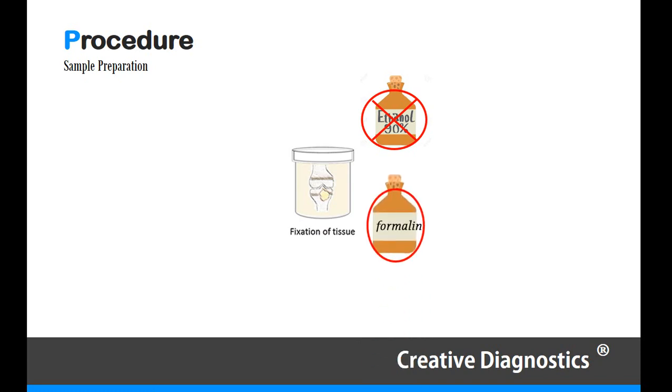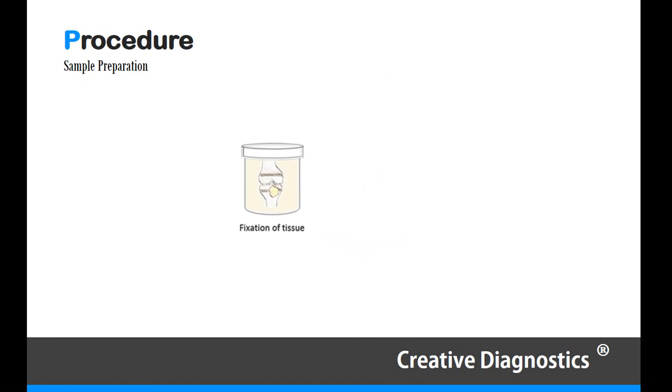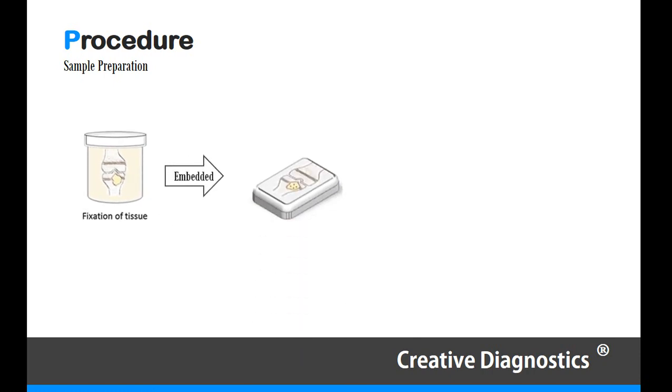Methanol, acetic acid fixation and formalin fixation are always used. After fixation, the sample is embedded in paraffin or OCT and sectioned to thin slices with a microtome or freezing microtome.